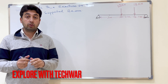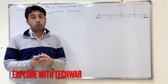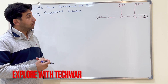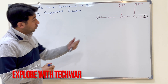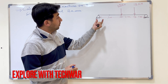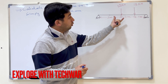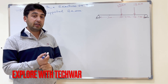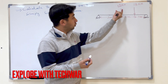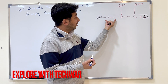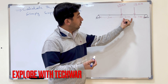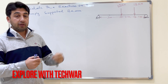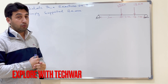Hello everyone, I hope everyone is doing well. In this video we will find the reaction forces on a simply supported beam. We have two point loads acting on the beam: 12 kilonewtons acting at 3 meters, and 18 kilonewtons acting at an additional 2 meters from that point.